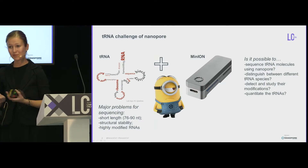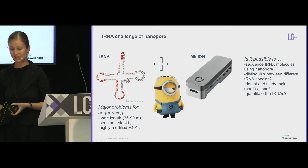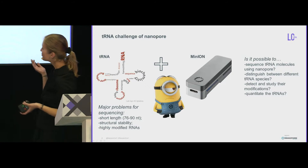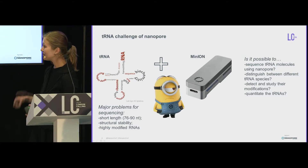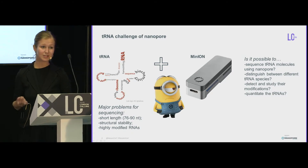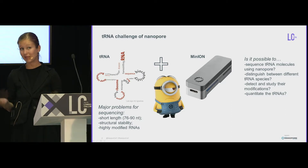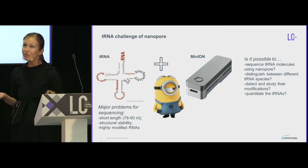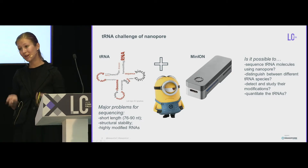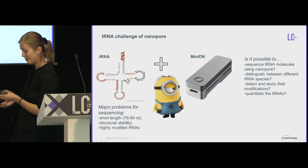Why tRNAs? There are major problems for sequencing with nanopore: the high error rate, the short read length, and tRNAs are very structurally stable, variable, and the most highly modified RNA species — a real challenge. However, the advantages of nanopore — portable, quick, cheap — allow us to give it a try. And modifications can be studied very well with nanopore, as we've seen from many talks. For tRNA modifications, there are plenty of them, they're different, and not all of them have their functions assigned, so this study sounds very promising.